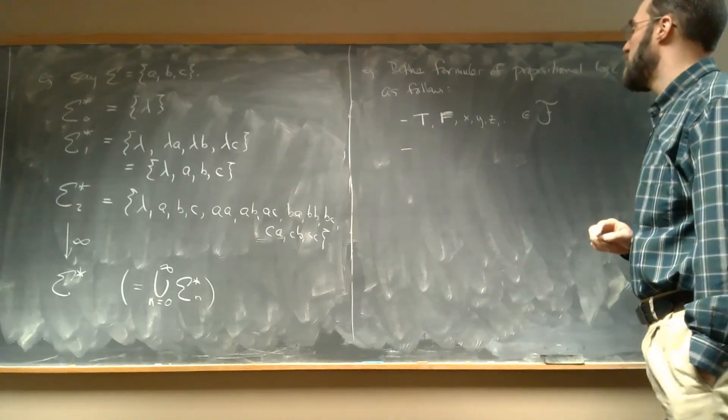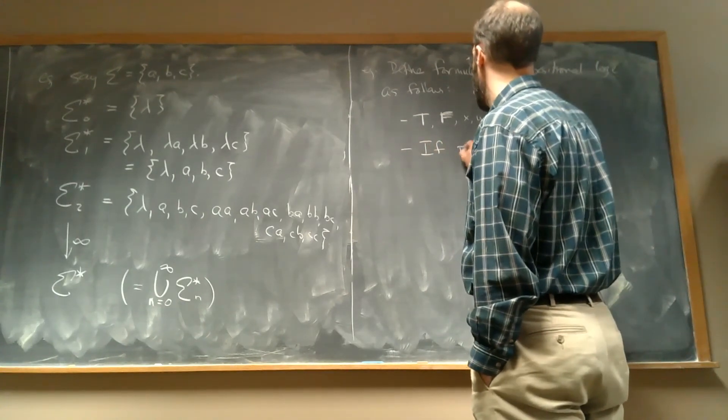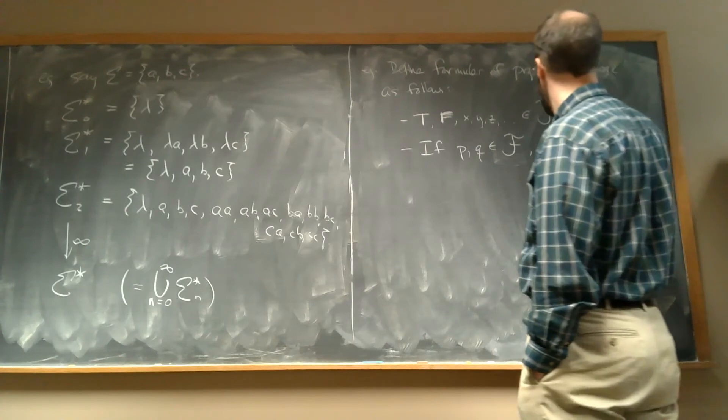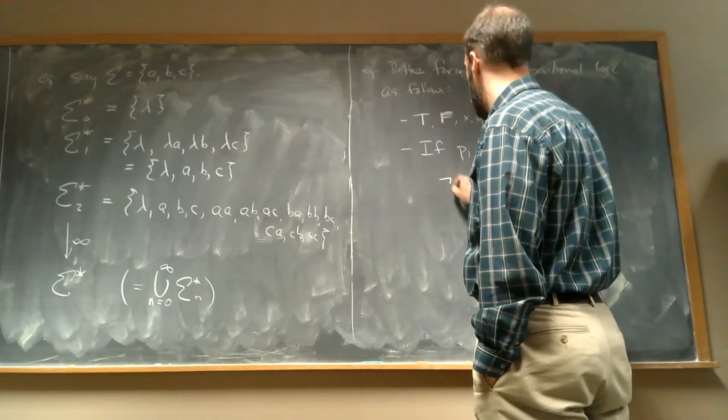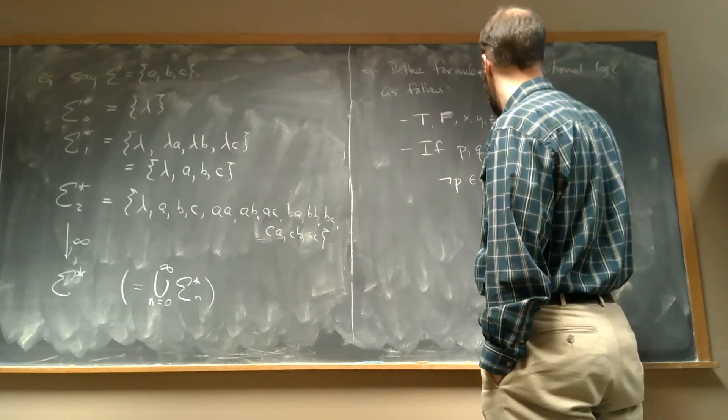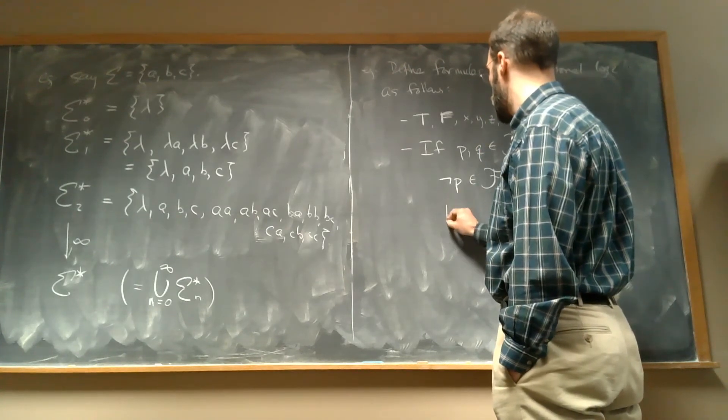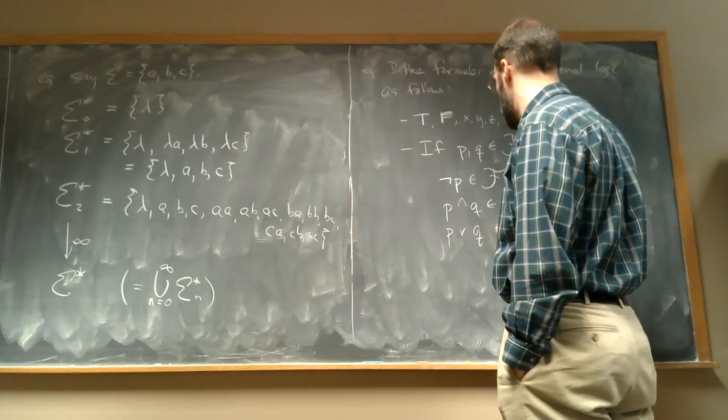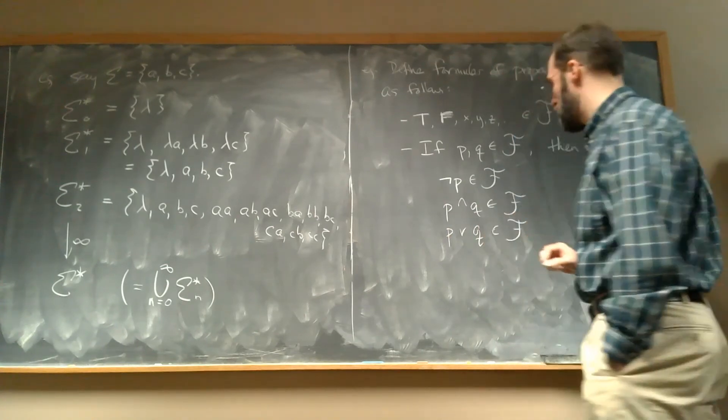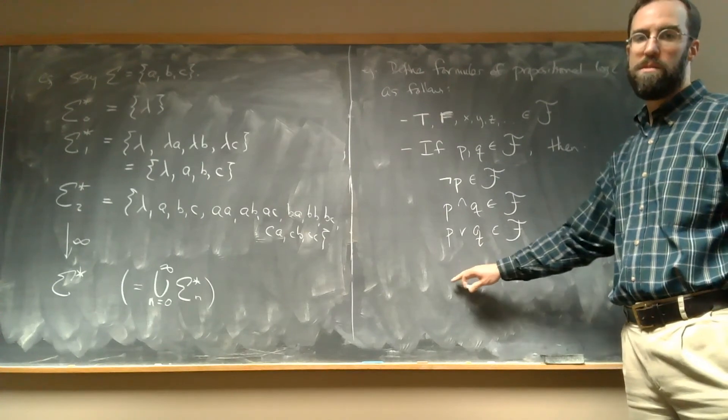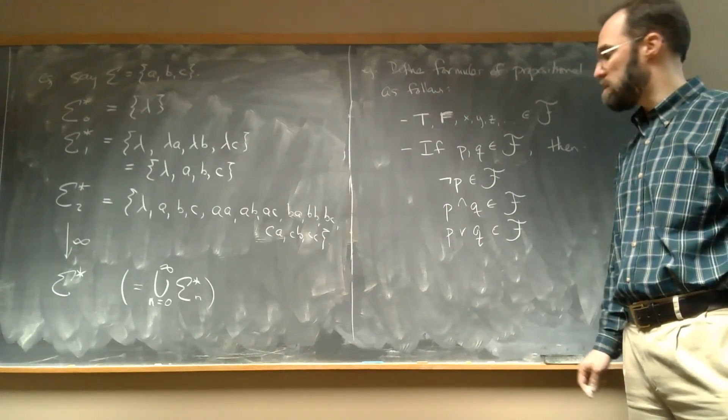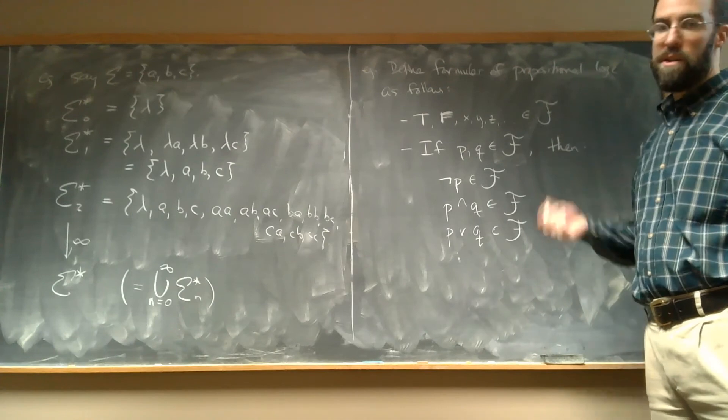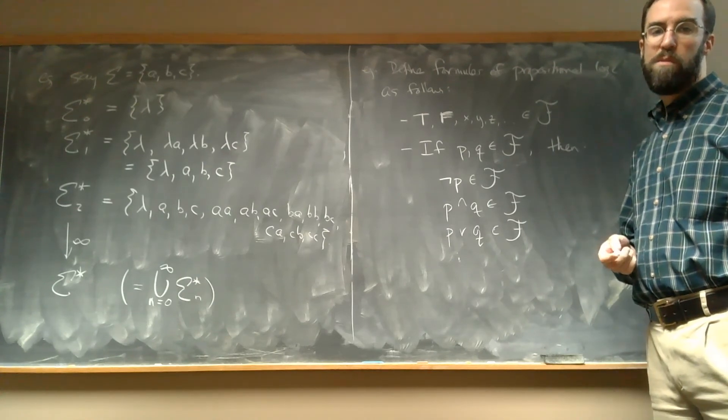And then in the inductive step, I say if P and Q are elements of F, then I want to say not P is in F. Also, P and Q is in F, and also P or Q is in F. And I could go on, I could say P implies Q, whatever kind of symbols we want to include, we could list them out. This is going to define all the possible formulas of propositional logic.